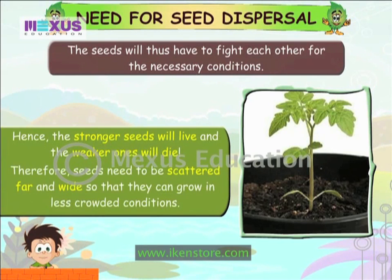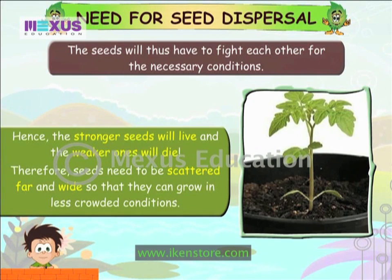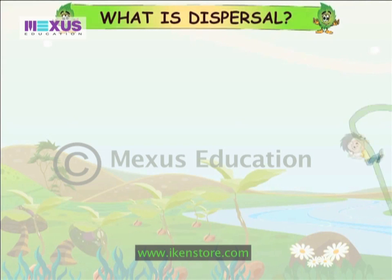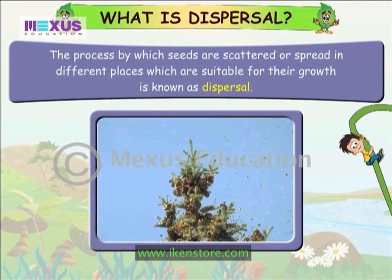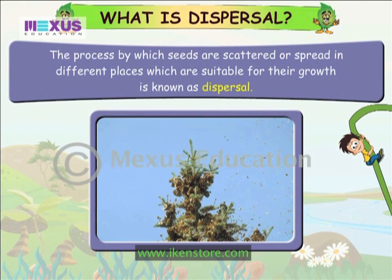Therefore, seeds need to be scattered far and wide so that they can grow in less crowded conditions. The process by which seeds are scattered or spread in different places which are suitable for their growth is known as dispersal.